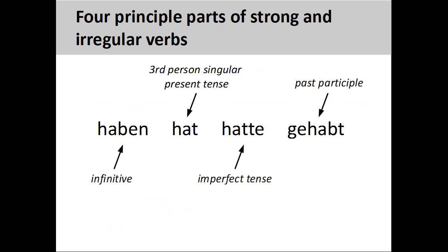In addition to regular verbs, German also has many irregular and strong verbs. These verbs have unusual variations in the conjugation of the present and imperfect tenses, as well as in the formation of the past participle. The imperfect tense is also known as the preterite, or simple past tense. Irregular verbs are sometimes also called mixed verbs.